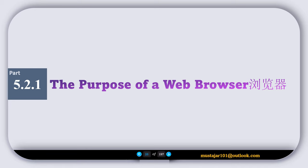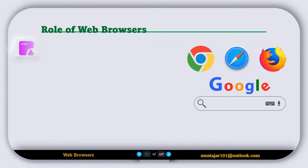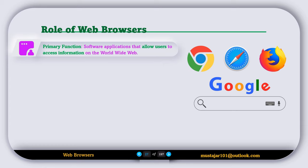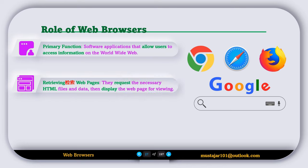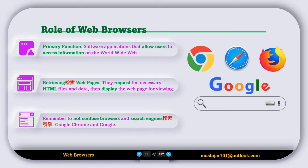5.2.1 The purpose of a web browser. A web browser is a type of application software that allows users to access information on the World Wide Web. A browser requests the necessary HTML files and data from the web server, renders them, and displays the content to the user. Remember not to confuse web browsers with search engines — Google Chrome is a web browser, while Google is a search engine.